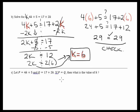Now, there is one more trick that they could throw at you. Look at this ugly thing. Let p equals 4k plus 5. And q equals 17 plus 2k. If p equals q, then what is the value of k? What a mess. This is a mess. But it's not really.